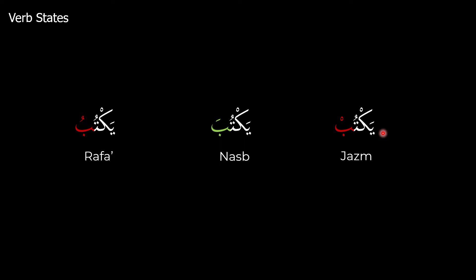All these cases are the present tense verb, and when it comes to the present tense, it is the only verb that can take on a state. The past tense verb does not — it is stateless. It is only the present tense that's going to show us its state, and it will show it to us via its ending, similar to how an ism does. And when it's transferred into the command or prohibition, it will also take on the jazim state.